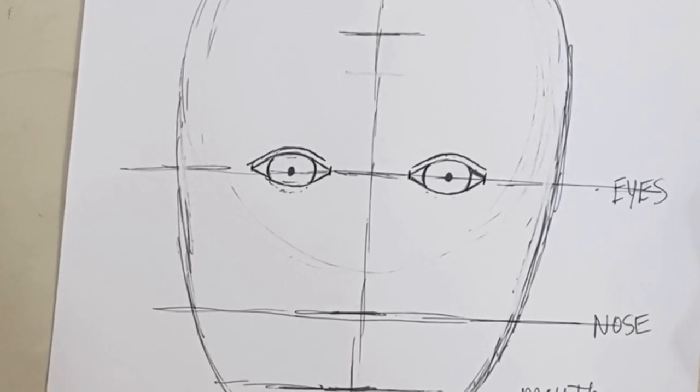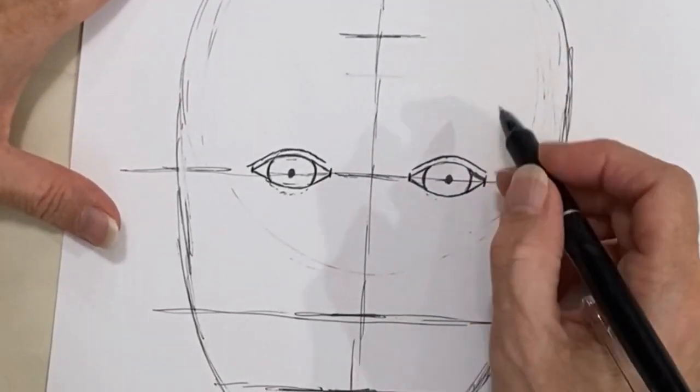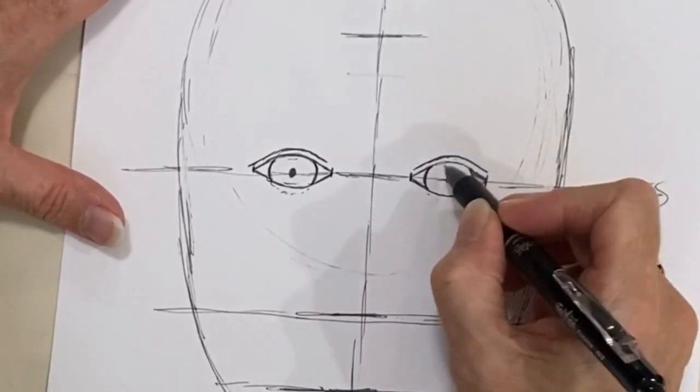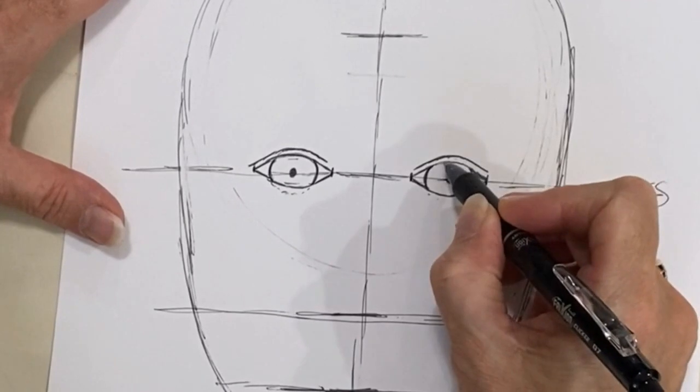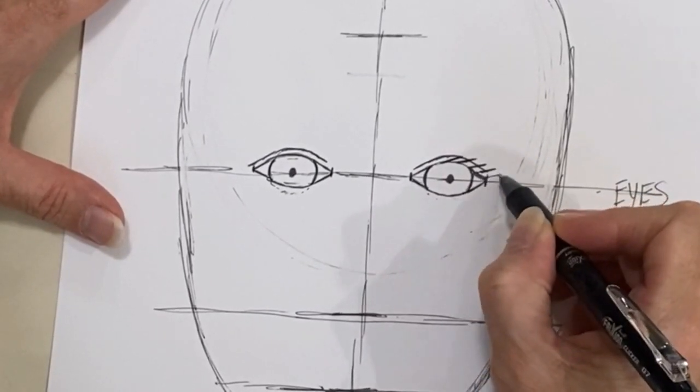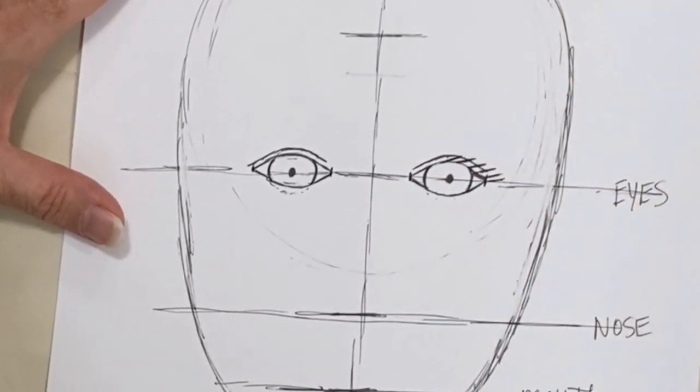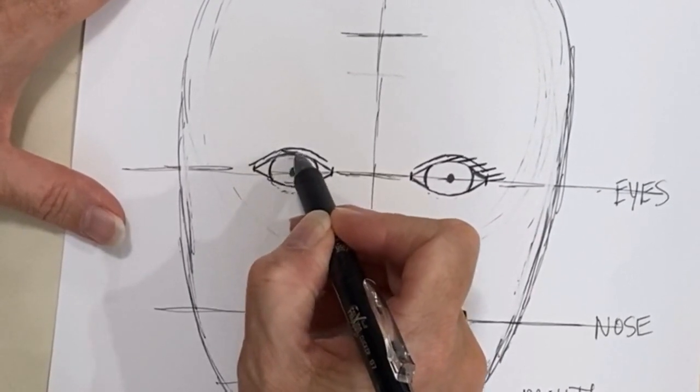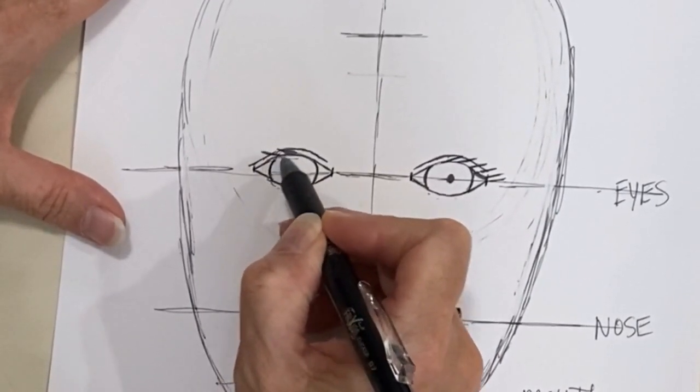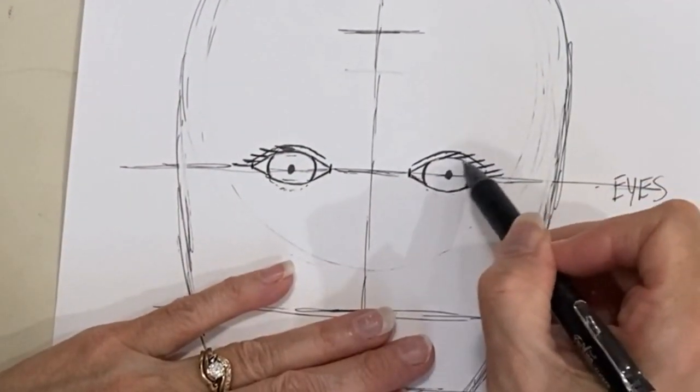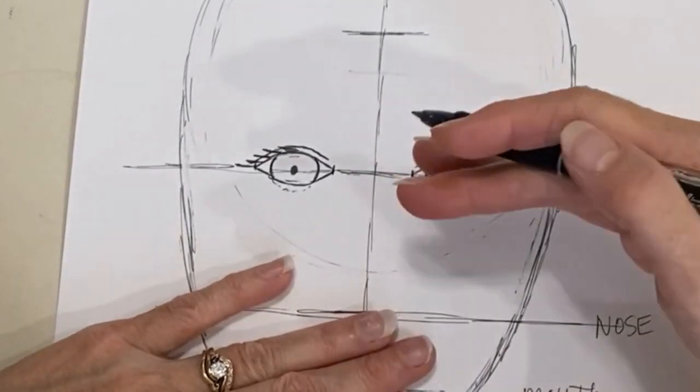And then the very last step of your eyes is to make your eyelashes. And what you're going to do for your eyelashes is different than you normally think. Your eyelashes are going to start in the center and they're going to be more sideways or horizontal than you think, going off to the outside corner of your eyes.